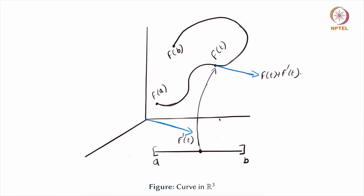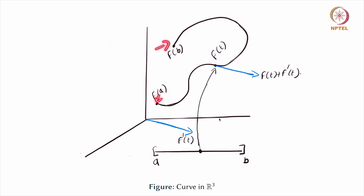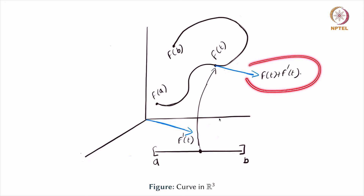Here is a picture that illustrates what is going on. You have a particle moving in space; at the starting point it is at f of a, at the ending point it is at f of b, and we are focusing on one particular point t. It takes the value f of t, and I have drawn approximately what the tangent vector f prime of t is going to be. The real f prime of t will be based at the origin. The actual vector shown is f of t plus f prime of t. This is a rough and somewhat inaccurate picture, but it will convey the basic idea.